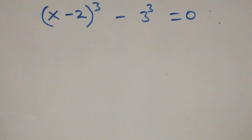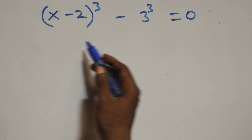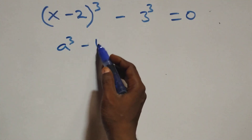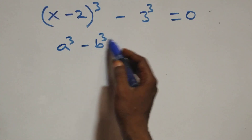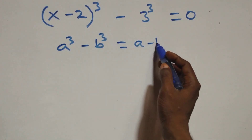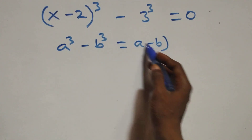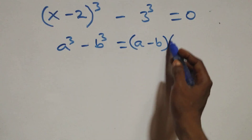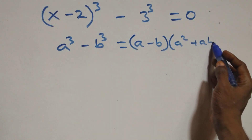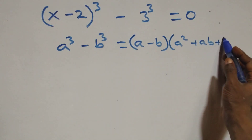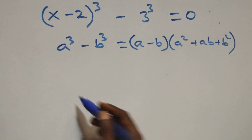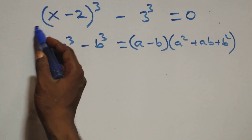Now solving from the second case: this uses the identity a³ minus b³ equals (a minus b)(a² + ab + b²).